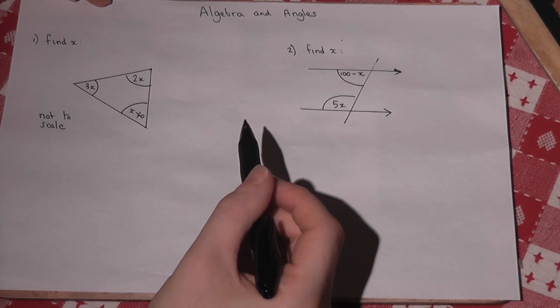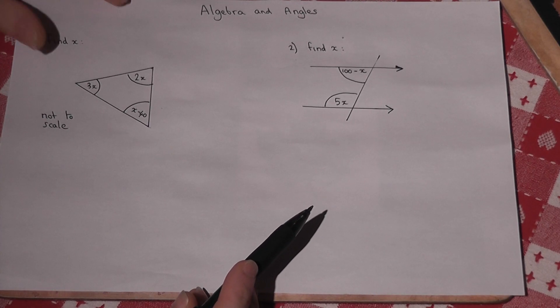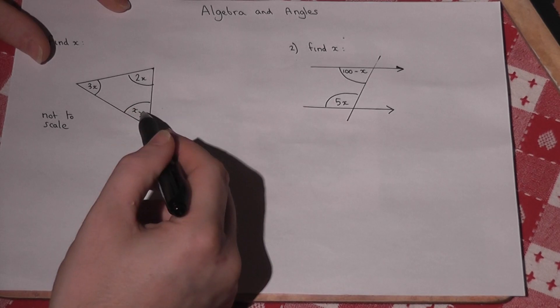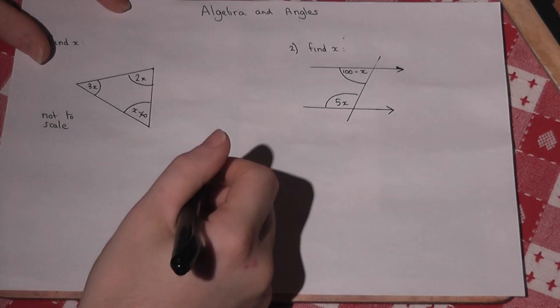Anyway, we know that in a triangle, the angles always add to make 180. So this plus this plus this must equal 180. So we can begin by writing that down mathematically.